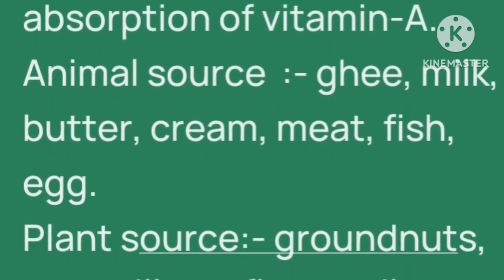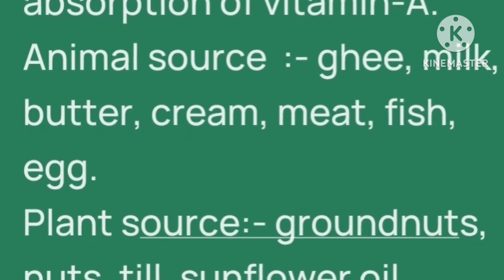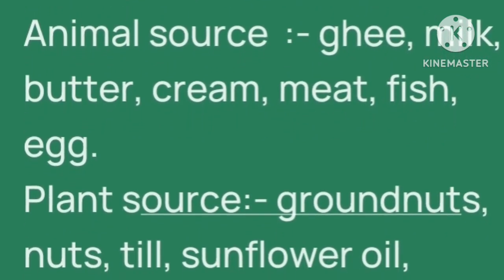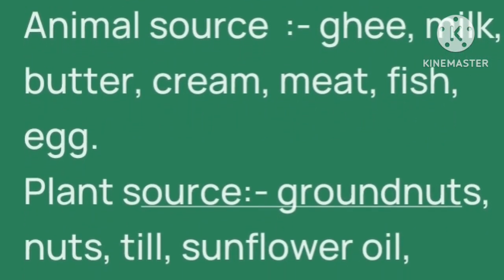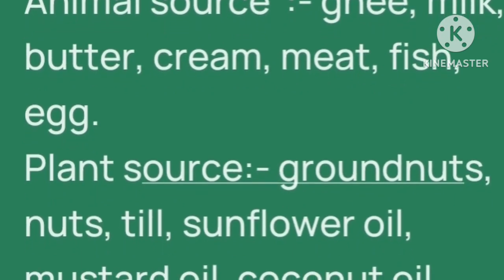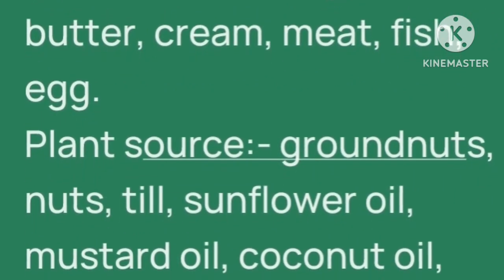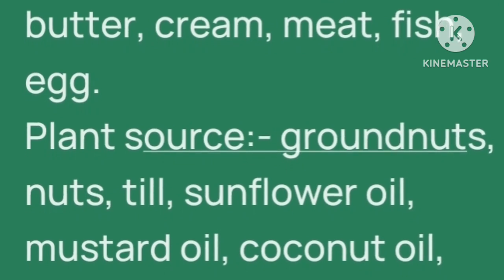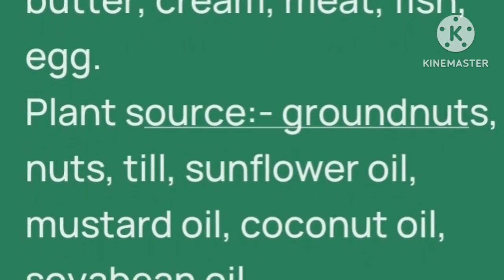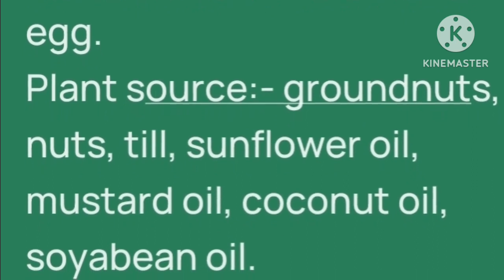हमें animals और plants दोनों से fat मिलता है. Animal sources: घी, milk, butter, cream, meat, fish and egg. And plant sources: ground nuts, nuts, till, sunflower oil, mustard oil, coconut oil and soybean oil.